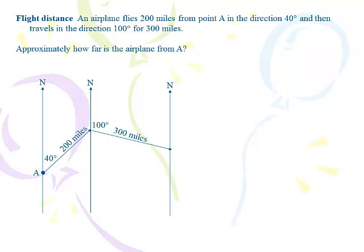So the airplane flies 200 miles from point A in the direction of 40 degrees. Remember, these are all coming from the north. And then flies in the direction of 100 degrees for 300 miles. And again, that 100 degrees is coming from the north. And approximately how far is the airplane from A? So we have the 200 miles, and we have the 300 miles, and we have the 40 degrees, and we have the 100 degrees. So the first thing we've got to figure out is what's the angle between our two legs.